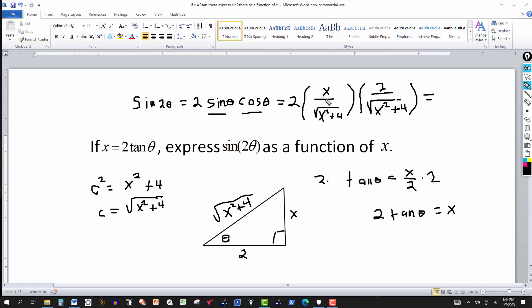Now we just need to simplify. So let's multiply the numerators out. We have 2 and 2. 2 times 2 is 4 and x. So we're going to get 4x there. Over, the square root of x squared plus 4 times the square root of x squared plus 4. So that will give me the square root of x squared plus 4 squared. But the square root of that is x squared plus 4.